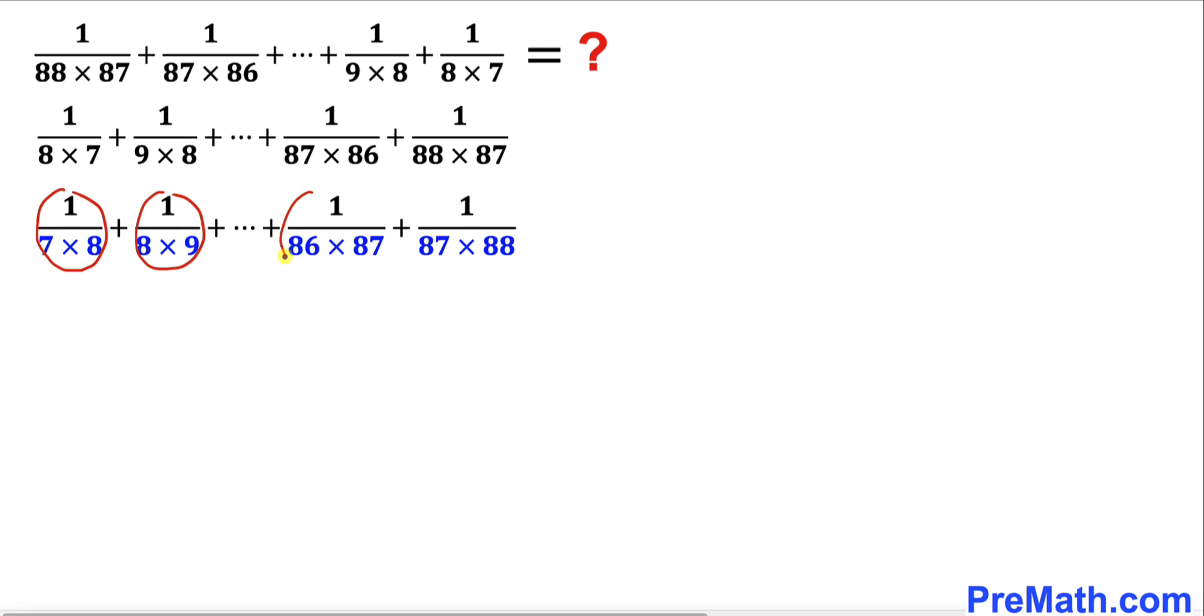Let's recall this formula: 1 divided by a minus 1 divided by a plus 1 is always equal to 1 divided by a times a plus 1. Let me show you the justification.